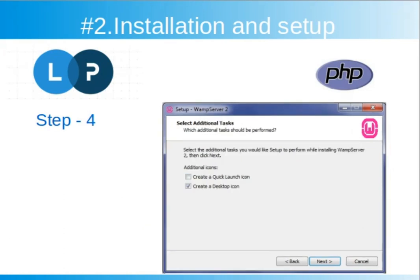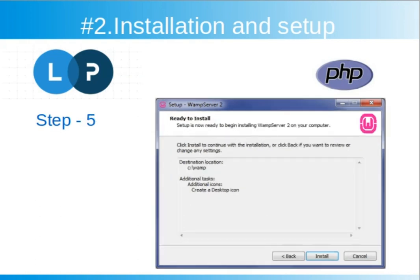This screen will ask for additional tasks — it will ask whether you want to create a launch icon or a desktop icon. That is your choice; check what you want and click next. The next screen is the final installation begin screen where you can see your previously chosen options.